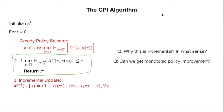Two questions to answer about CPI: first, why is this an incremental algorithm and incremental in what sense — we need to define a metric for similarity? Second, can we guarantee monotonic improvement?